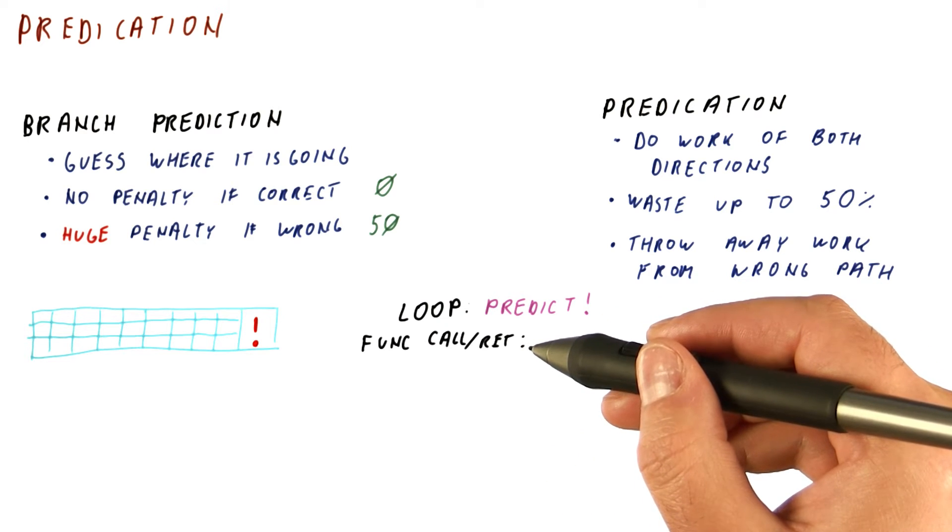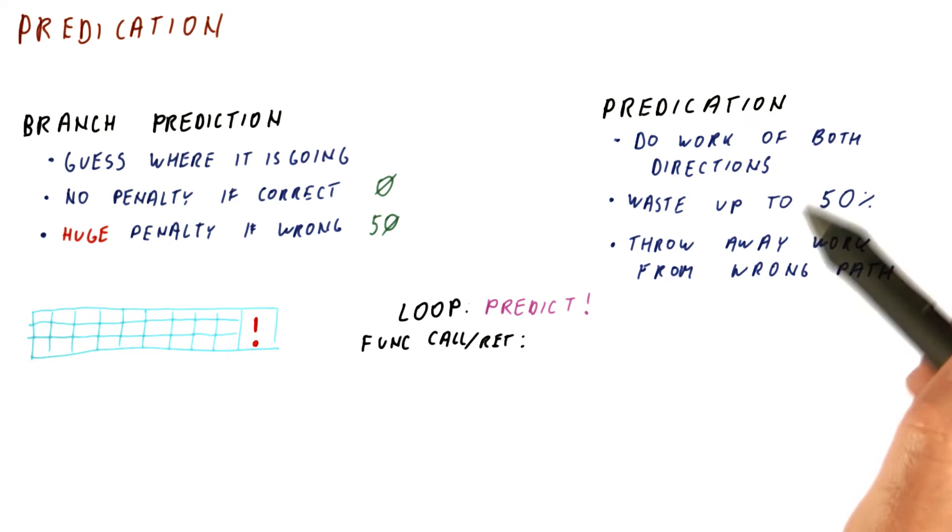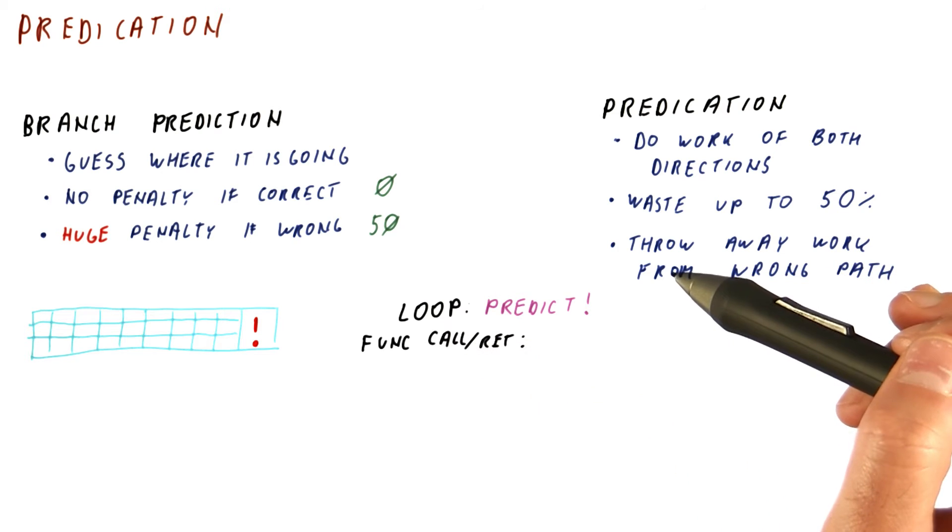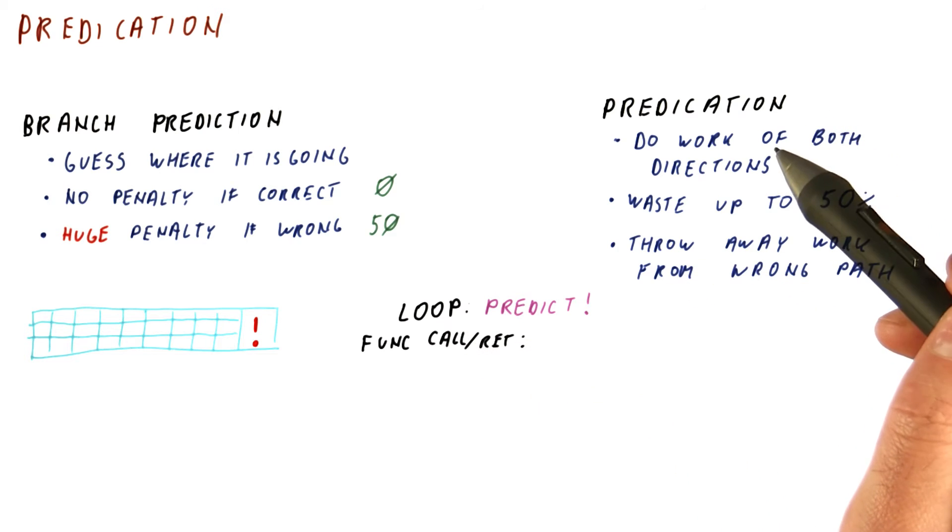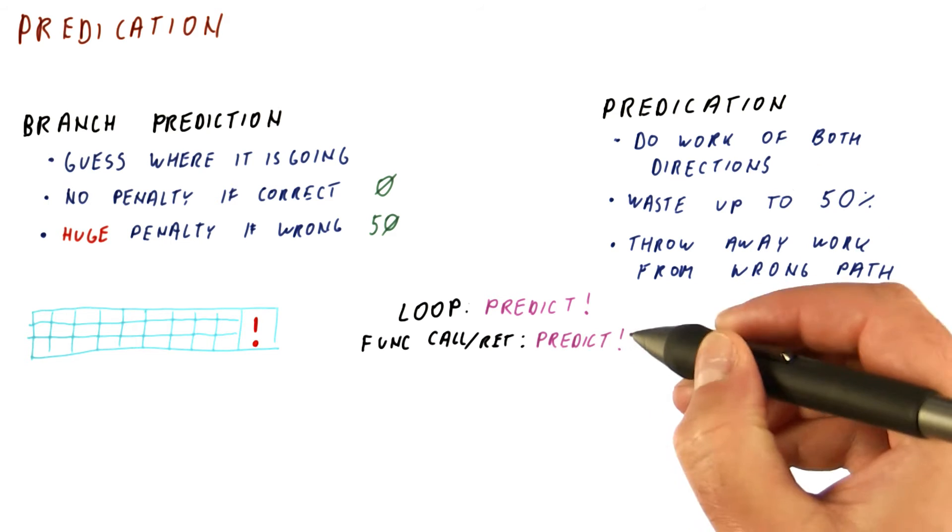Function call returns, same thing. Except, predication really makes no sense. Because calls and returns always go there. So somehow the direction of not going there makes no sense to do. So we want to predict.